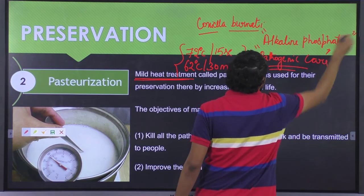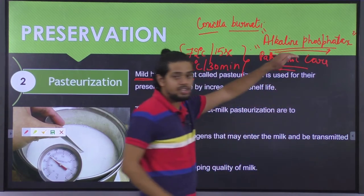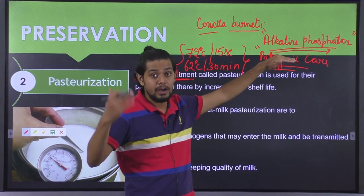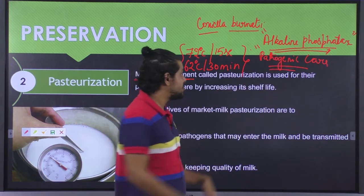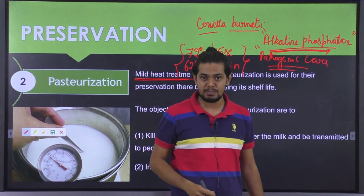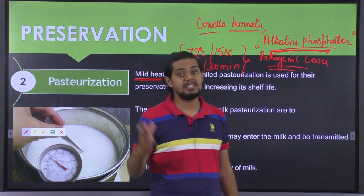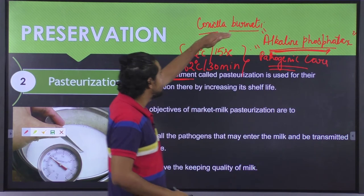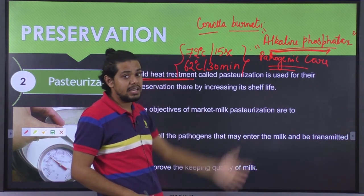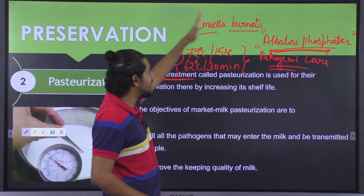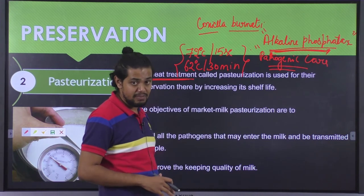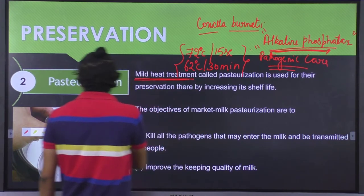Alkaline phosphatase is an enzyme which gives us an indication about the efficacy of pasteurization. If after pasteurization the alkaline phosphatase enzyme is still present, it means the milk has not been significantly pasteurized. Similarly, if we find the presence of coxiella burnetii, it means it has not been significantly taken care of, implying that other pathogenic microflora may still be surviving.